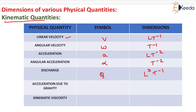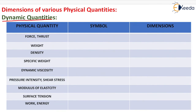Acceleration due to gravity, symbol g, dimension LT⁻². Kinematic viscosity, symbol ν (nu), dimension L²T⁻¹. For dynamic quantities: force or thrust, symbol F, dimension MLT⁻²; and weight, symbol W, dimension MLT⁻².